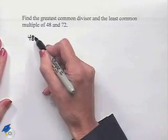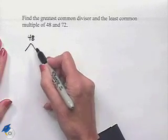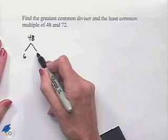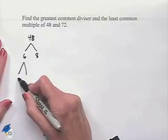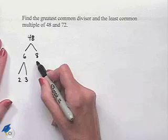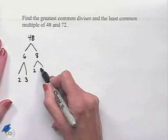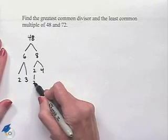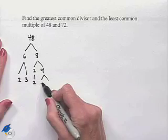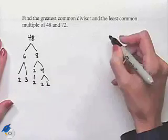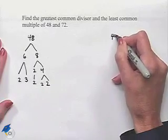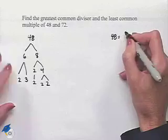Of 48, we'll use a factor tree. Notice that 48 is equal to 6 times 8. 6 can be factored further: 2 times 3. 8 can be factored as 2 times 4, and then we'll bring down the 2, and our 4 is 2 times 2. Now we can write the prime factorization of 48 as 2 to the 4th power times 3.